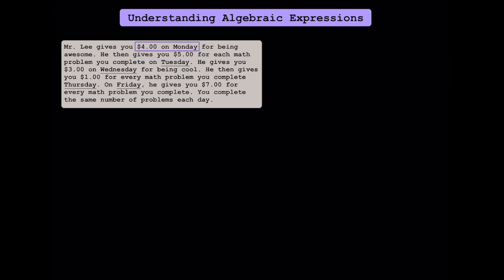It looks like Mr. Li is going to start off by giving you $4 on Monday. On Tuesday, he's going to give you $5 for every math problem that you complete. On Wednesday, he's just going to give you $3 for being cool. On Thursday, you're going to get $1 for every math problem that you complete. And finally on Friday, you're going to get $7 for every math problem that you complete. I think a lot of people would maybe like math a little bit more if they were getting paid for every problem they were doing.